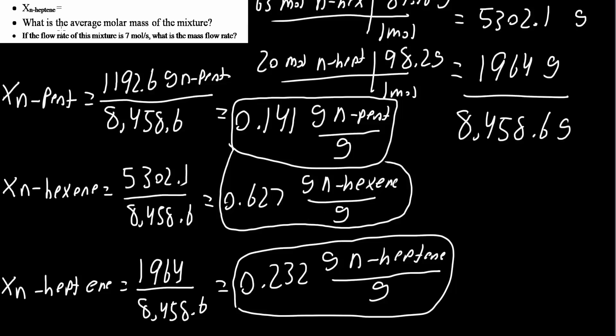We also want to find the average molar mass of the mixture, and if the flow rate of this mixture is 7 moles per second, what is the mass flow rate in grams per second? I'm going to scroll down to solve the next question, which is the average molar mass of the mixture.